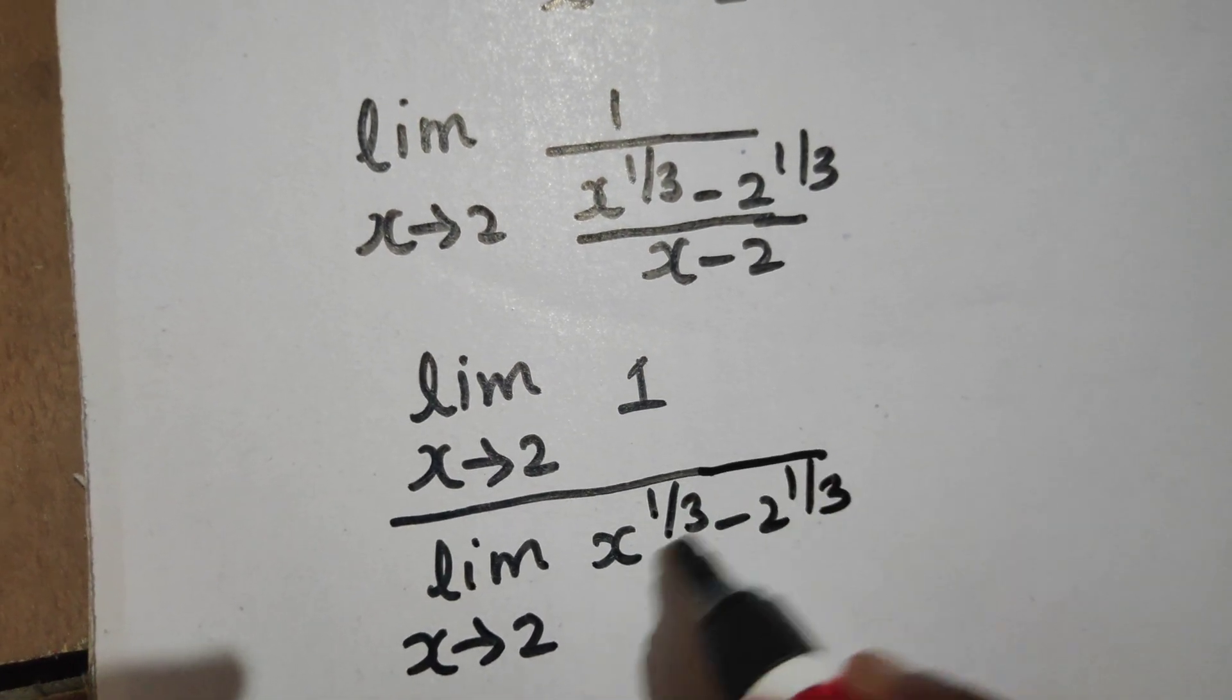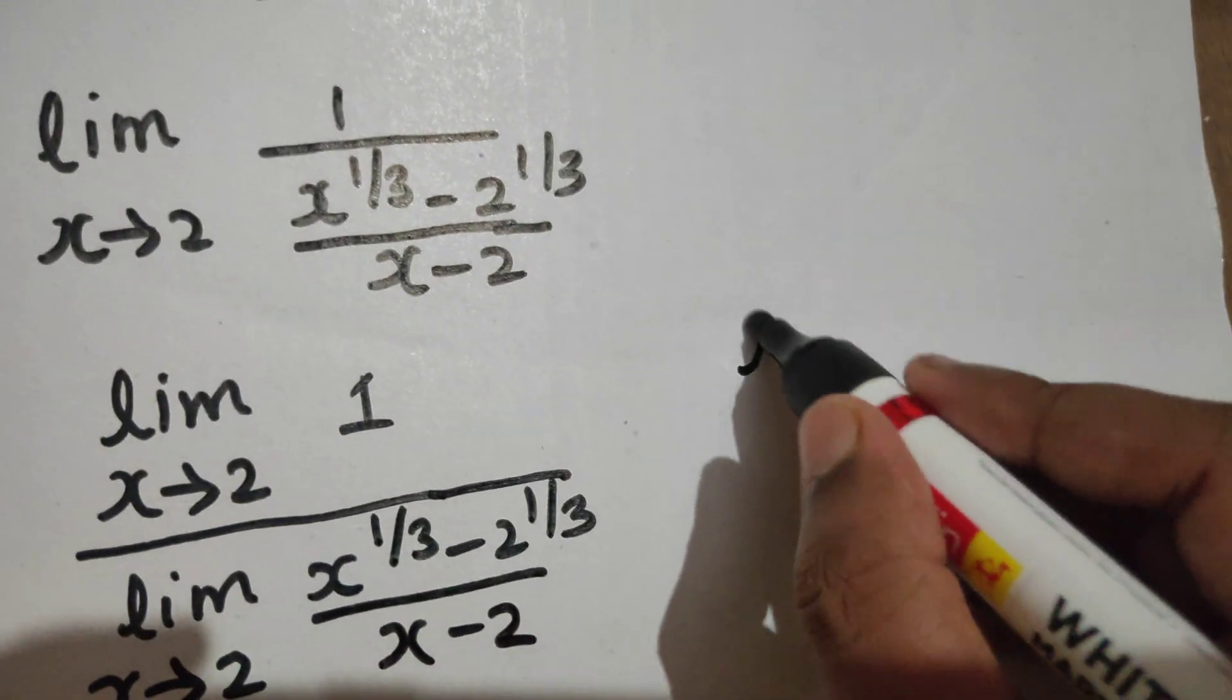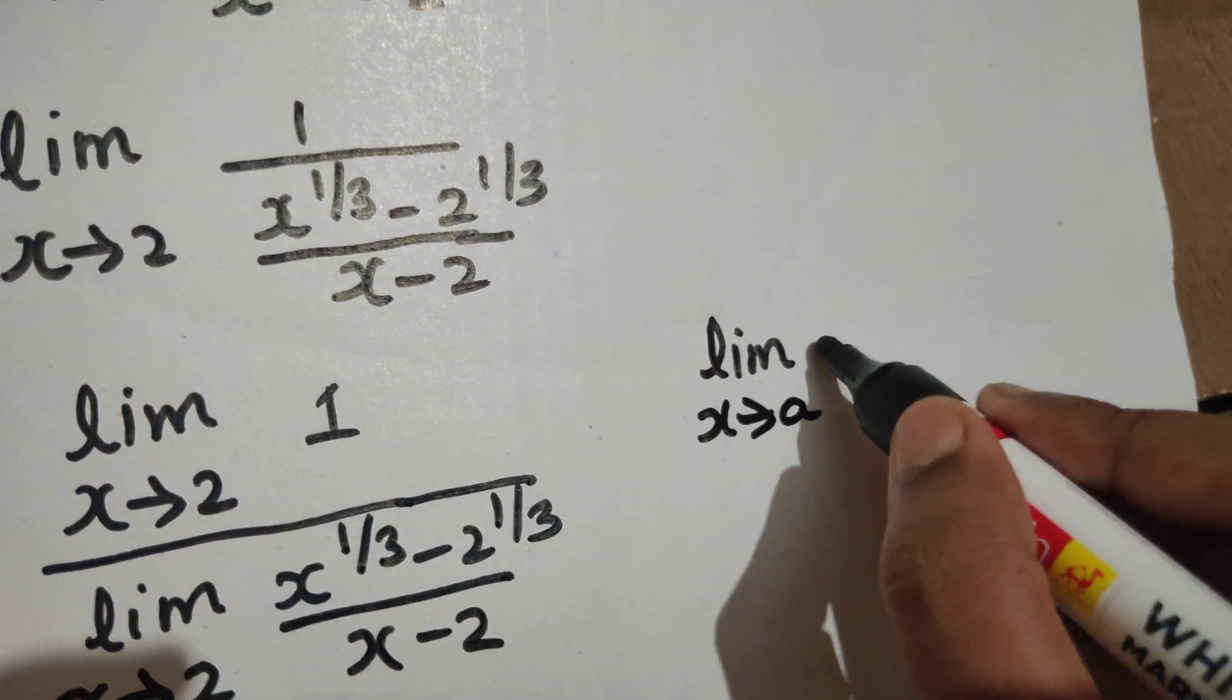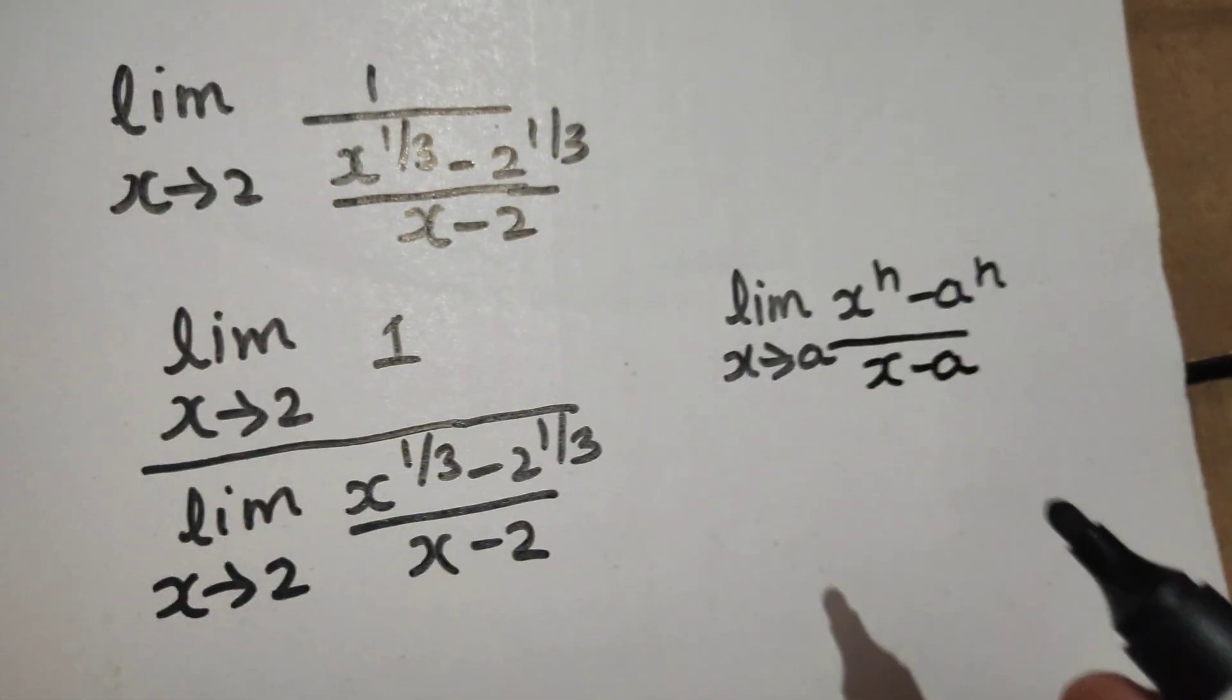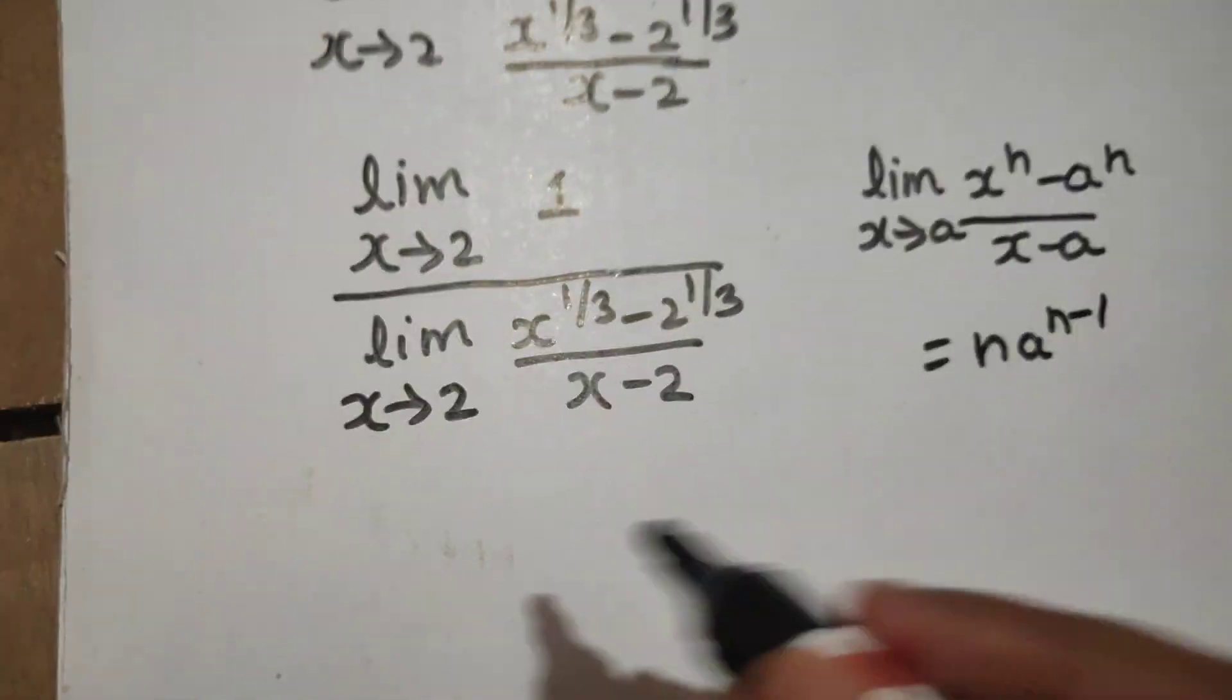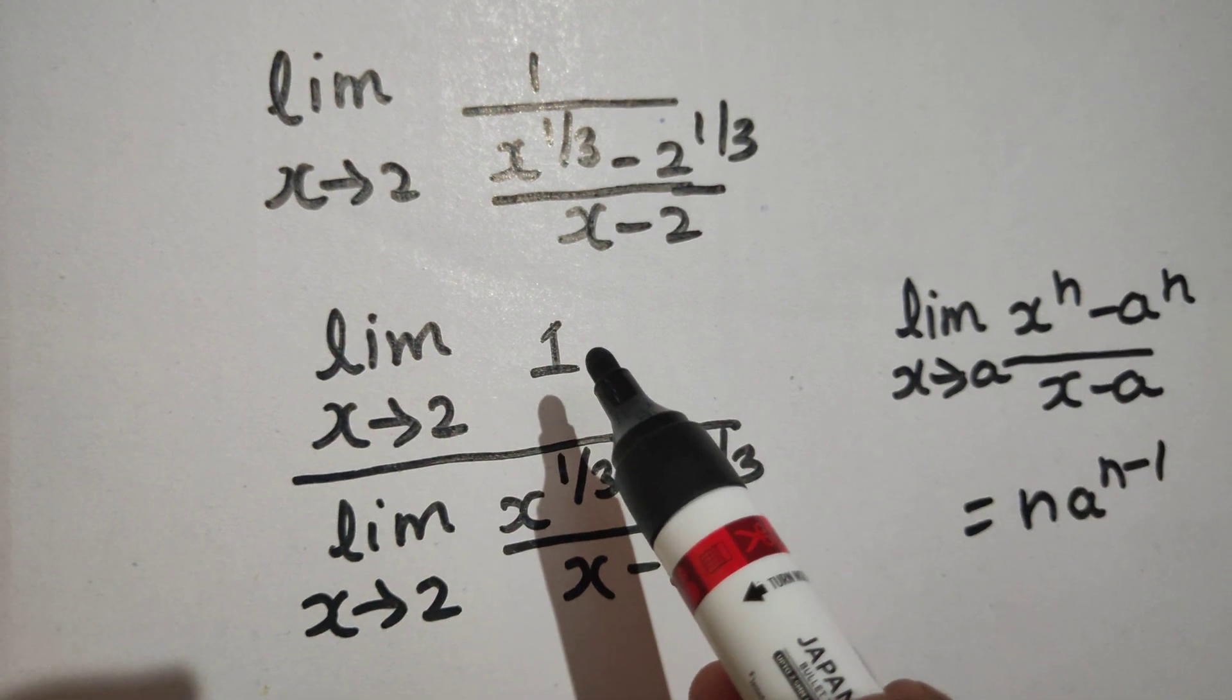Now can you remember that formula, that magical formula? Limit x tending to a of x power n minus a power n divided by x minus a, this straightaway gives you n times a power n minus 1. So in the numerator directly the limit will be 1.